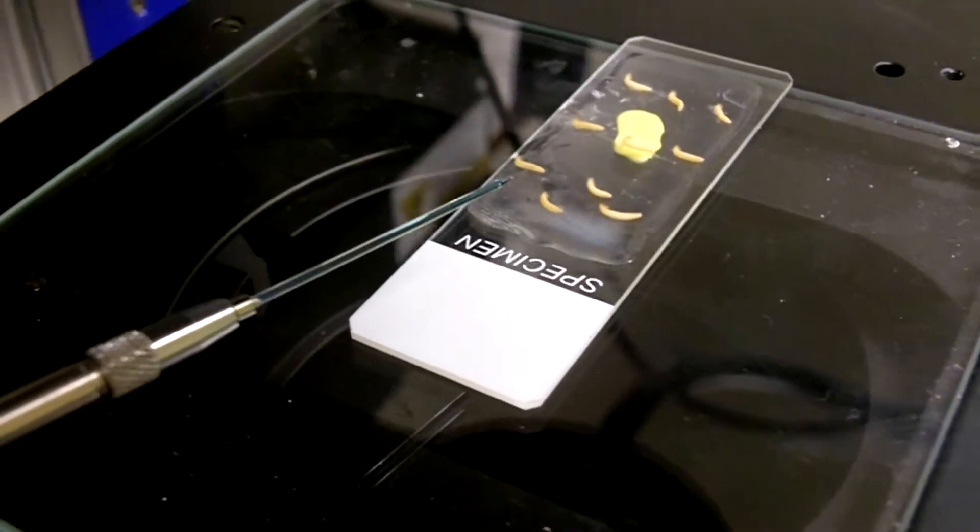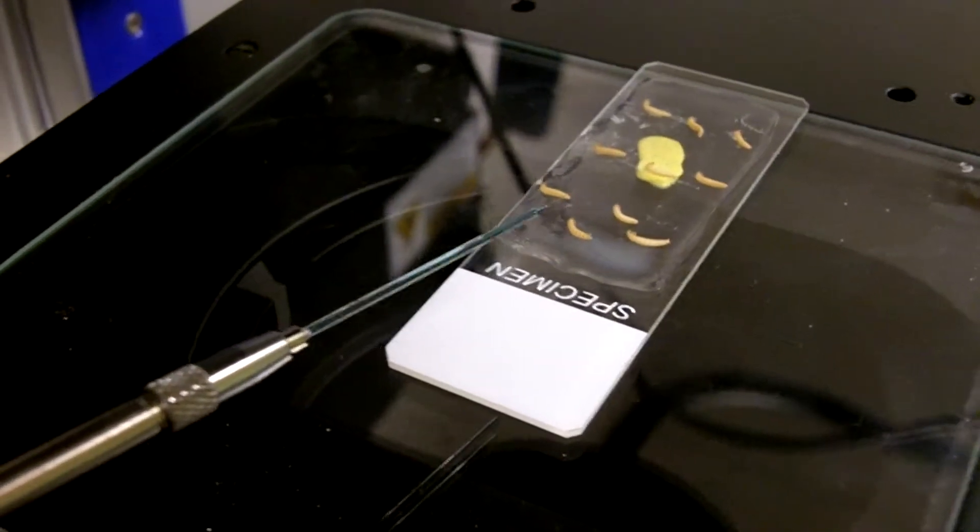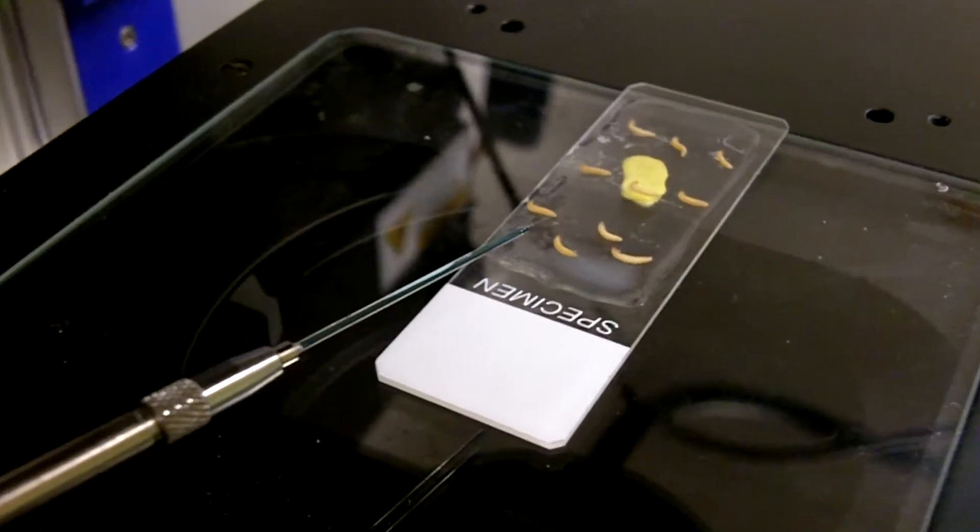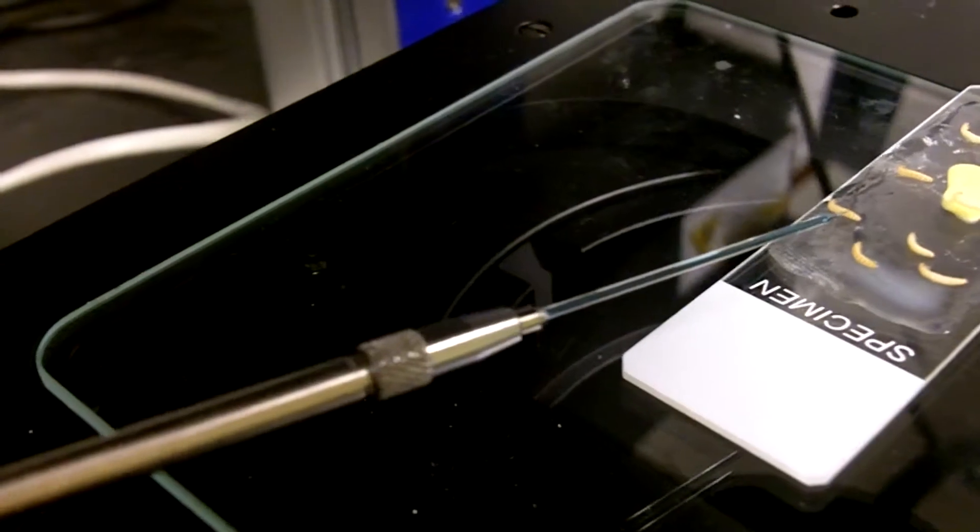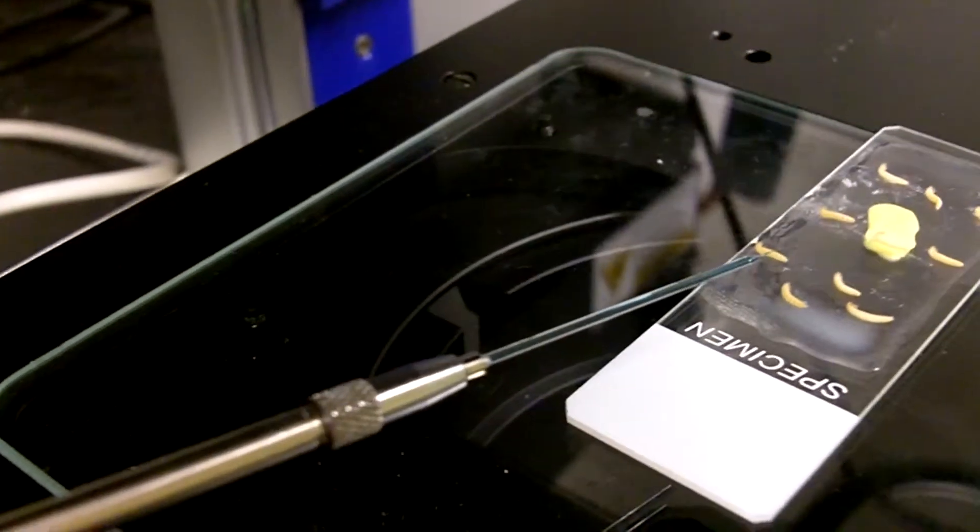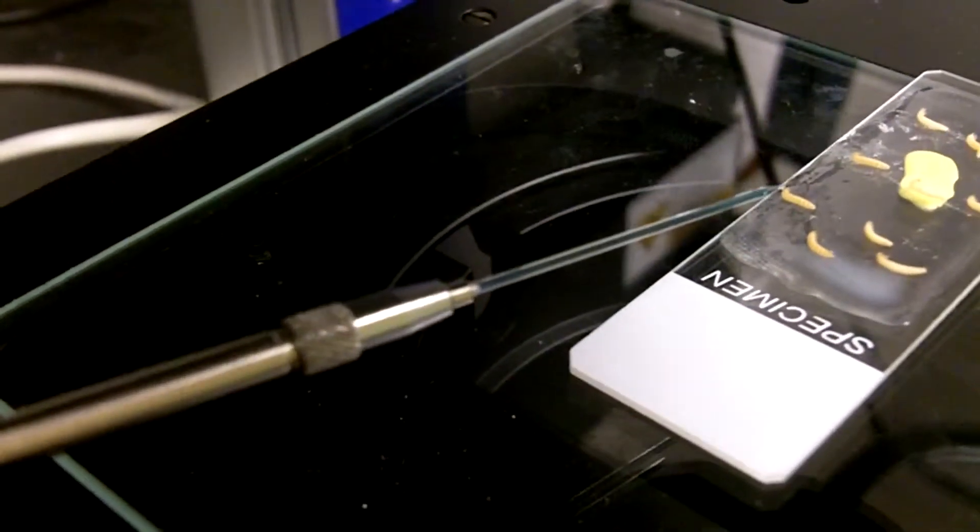Everything is now ready to begin the injection. You can see here on the stage there's the slide with the larvae positioned on it. The needle is also loaded with a double-stranded RNA solution. So we're ready to go.